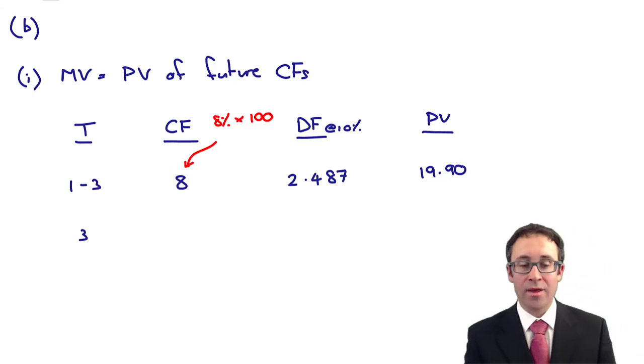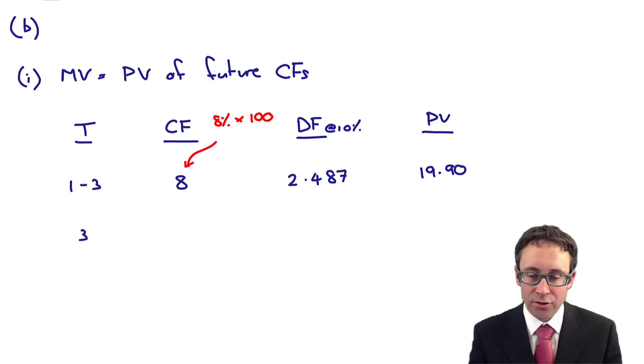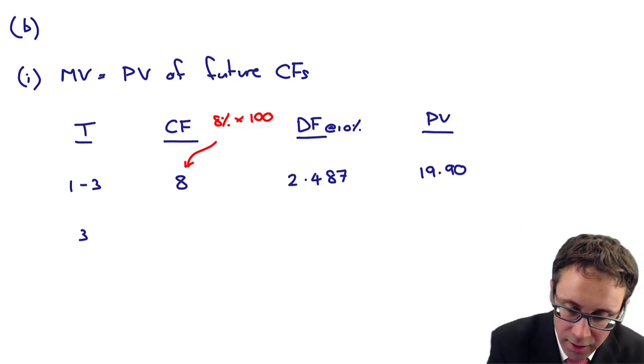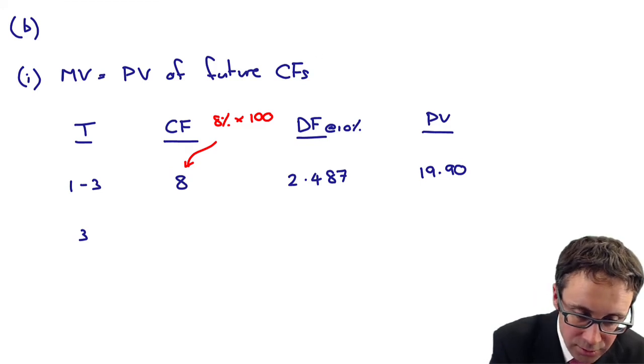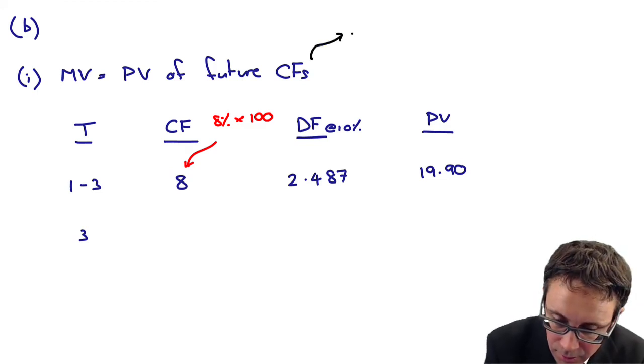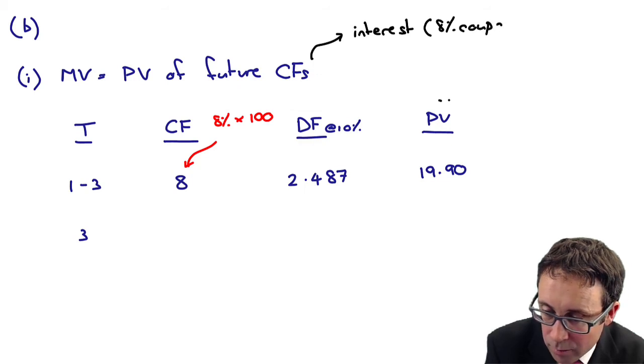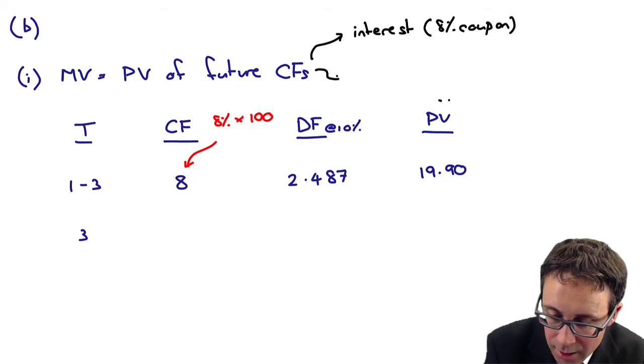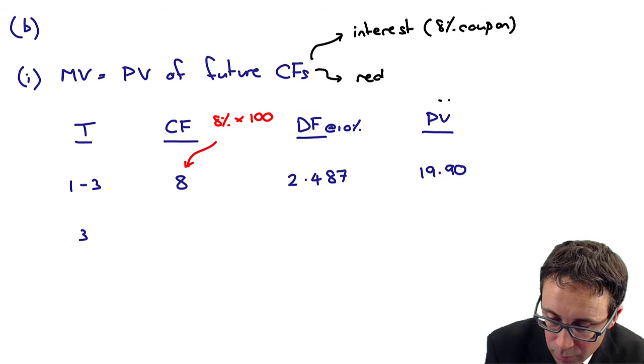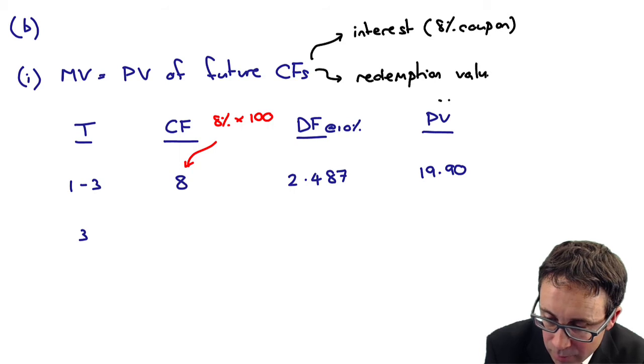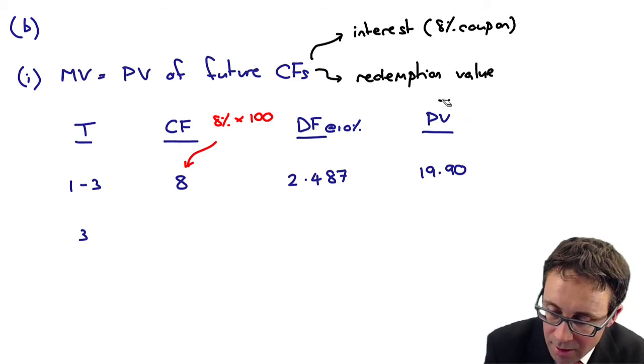Then we need to do a little bit of discounting. The investor required a rate of 10%. So an annuity factor for three years at 10% is 2.487. You can use your tables to work that out. And your present value is at 19.90. 2.487 times 8 is 19.896 or 19.90.